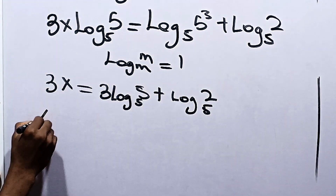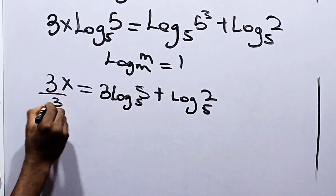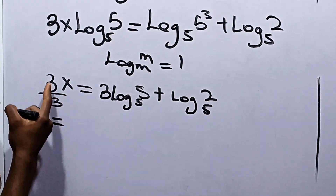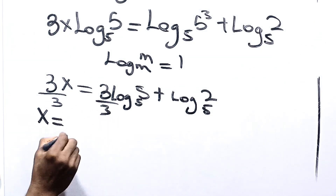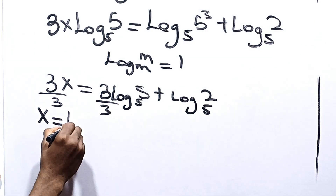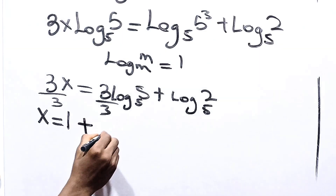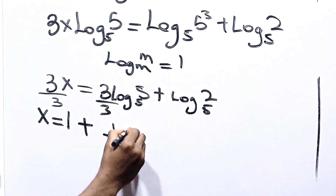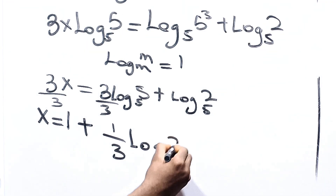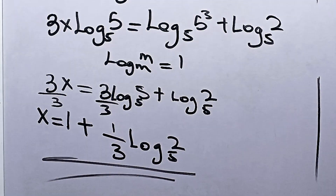Now solving for x, we divide everything by 3. 3 divided by 3 is 1, so we have x equals logarithm base 5 of 5, which is also 1, plus one-third multiplied by logarithm base 5 of 2. So this becomes your final answer in this question.